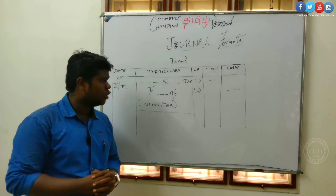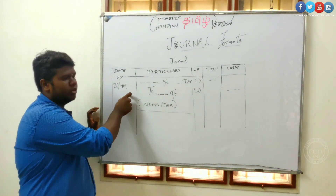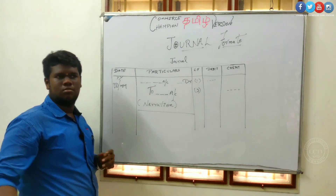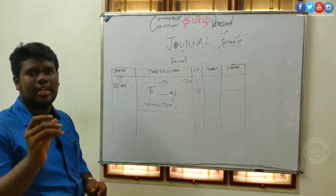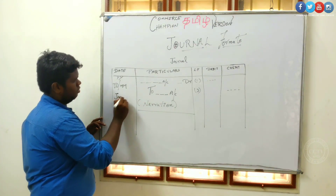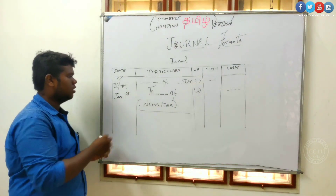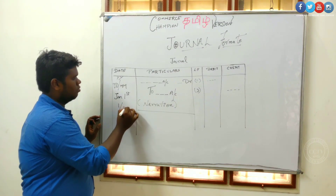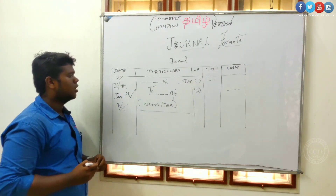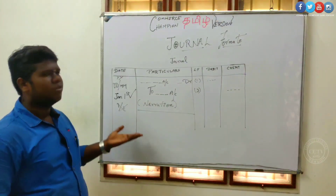If you have a main issue on the date line, you can get the number in a month. For example, you can enter a new year. So, 1st January — this is 1st January as an example date entry in the journal format.